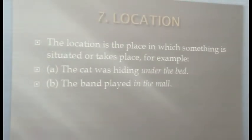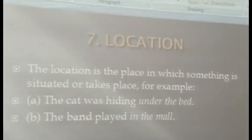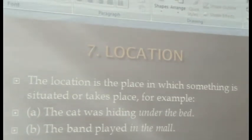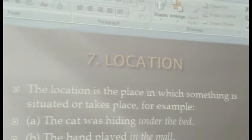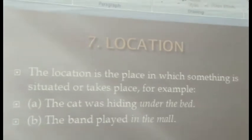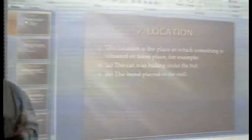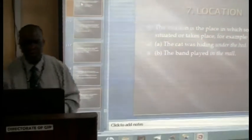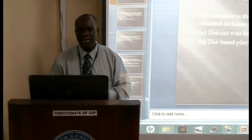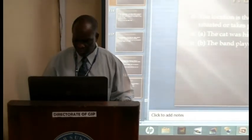The seventh thematic role relates to what is called the location — the place in which something is situated or takes place. For example, 'The cat was hiding under the bed.' Where is the cat hiding? Under the bed — that is the location. Another example: 'The band played in the mall.' Where did the band play? In the mall — that describes the location of the band.